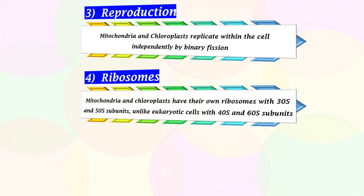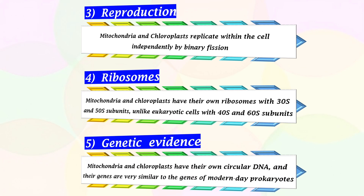Ribosomes: mitochondria and chloroplasts have their own ribosomes with 30S and 50S subunits, unlike eukaryotic cells with 40S and 60S subunits. Genetic Evidence: mitochondria and chloroplasts have their independent circular DNA, and their genes are very much similar to the genes of modern-day prokaryotes.